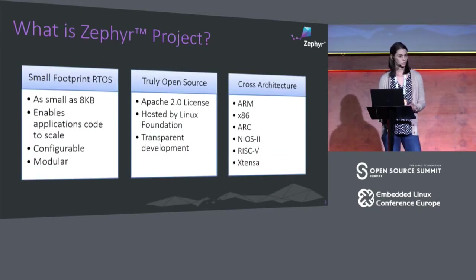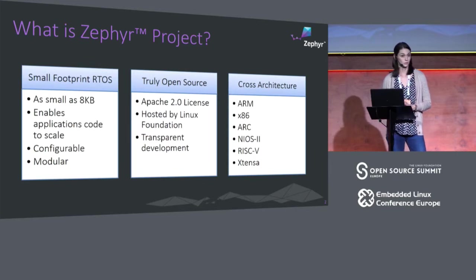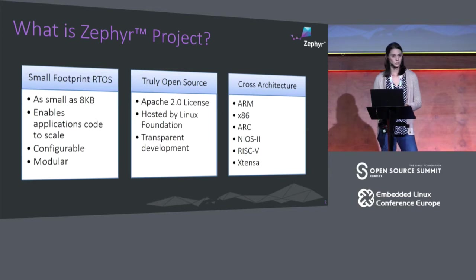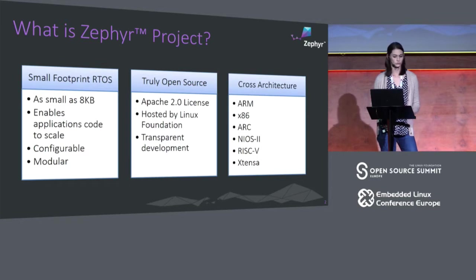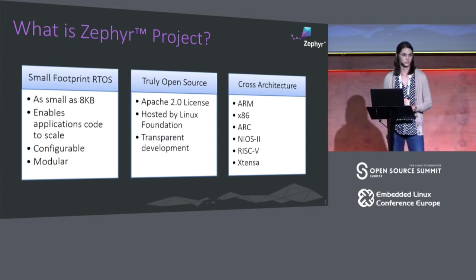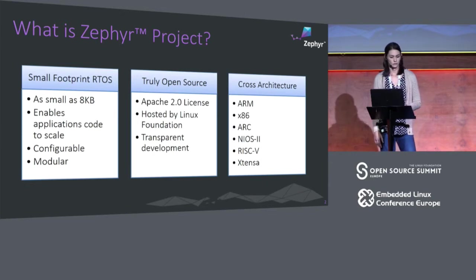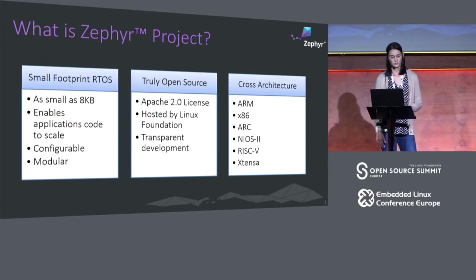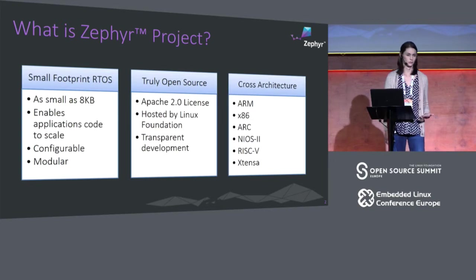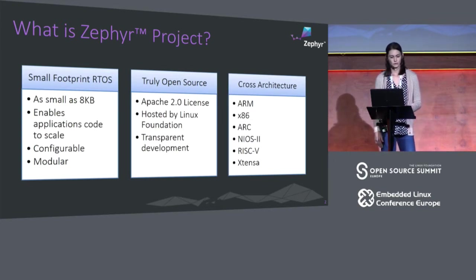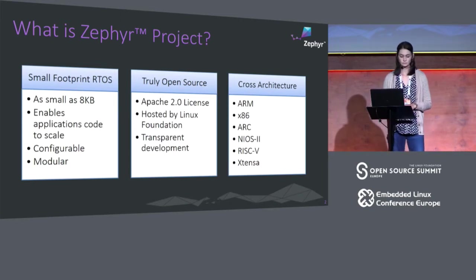Just a quick introduction about what the Zephyr project is for those of you that maybe aren't quite as familiar with it. The Zephyr project is an open source project hosted by the Linux Foundation targeting small footprint RTOSs — things like microcontrollers that can scale down into devices that have single digits or so of kilobytes of flash and RAM, and anywhere up from there. It's a cross-architecture project with participation from a number of different companies — not just the ARM ecosystem but also x86, ARC, RISC-V, and Xtensa architectures.